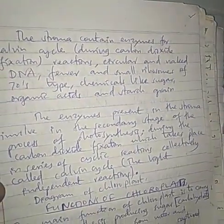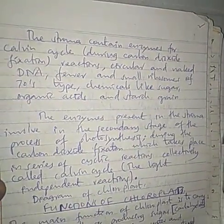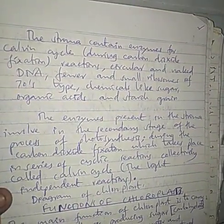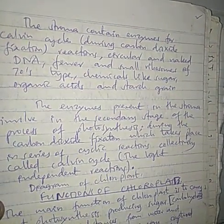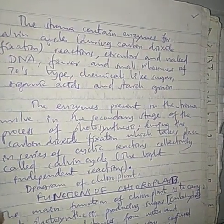We shall discuss the structure of Chloroplasts further in the topic of nutrition. The stroma contains enzymes for the Calvin cycle during carbon dioxide fixation reactions, as well as circular and naked DNA.